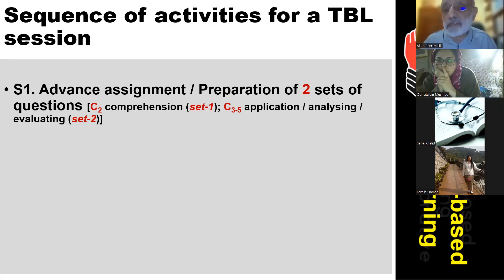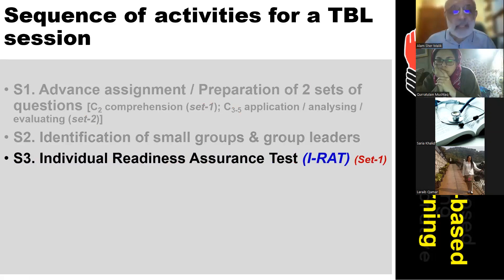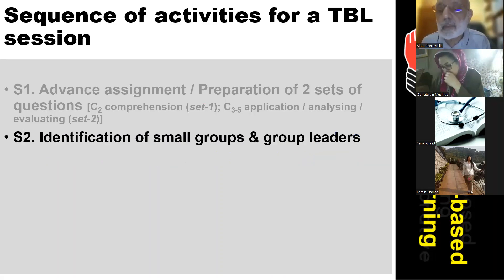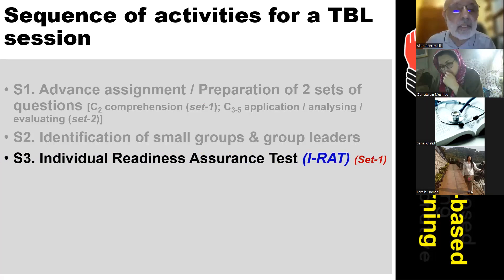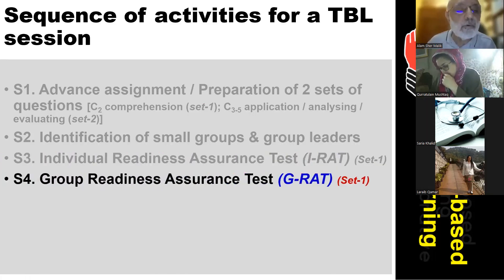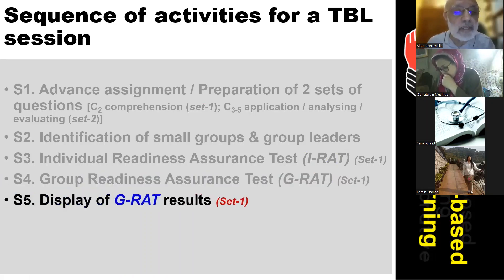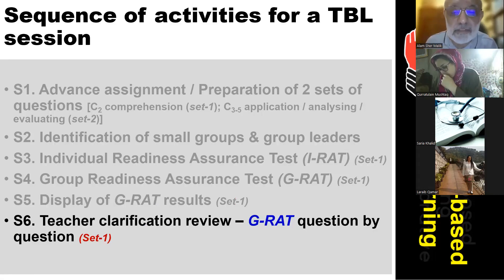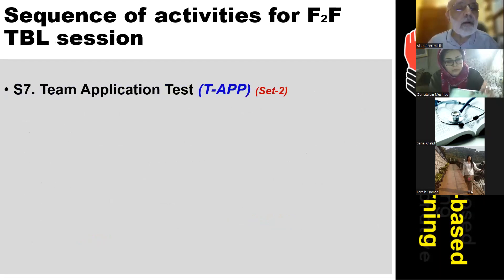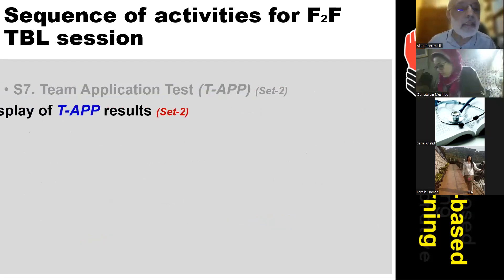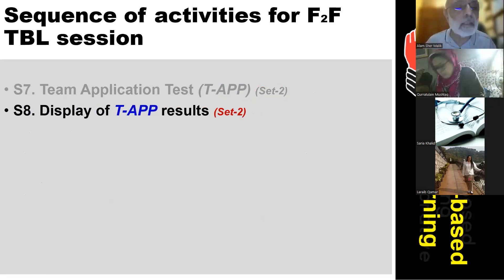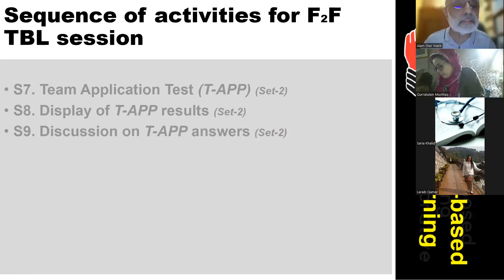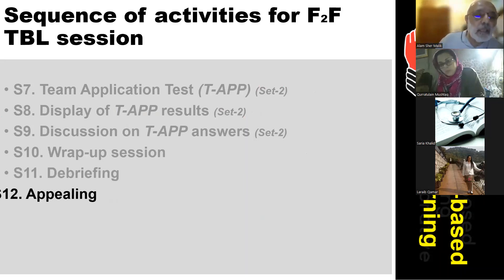The first step is students' preparation or lecturers' preparation. The second step is identification of small groups and group leaders. The third step is individual readiness assurance test. The fourth step is group readiness assurance test. The sixth step is teacher clarification review, question by question. The seventh step is team application test. The eighth step is display of team application results. The ninth step is discussion of answers, the tenth is wrap-up, the eleventh is debriefing, and the twelfth is appealing.